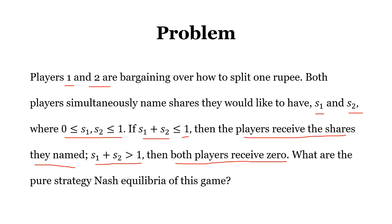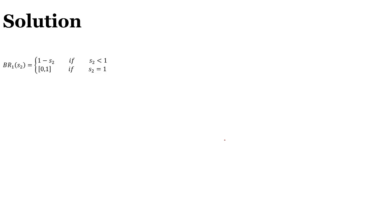So what are the pure strategy Nash equilibria of this game? First of all, I have drawn the best response function for player one. The best response of player one given the strategy of player two is s1 equal to this value.